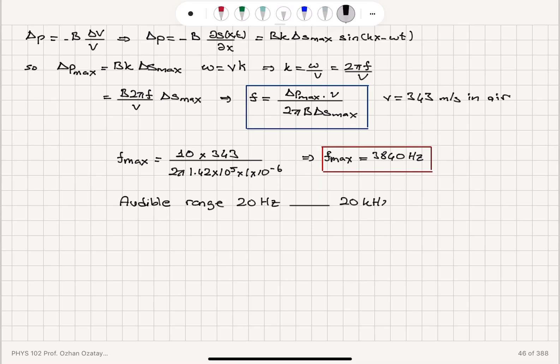So we need to check if this frequency is in this range and it is. So F max equals 3840 hertz is in the audible range. So the workers can hear this sound.